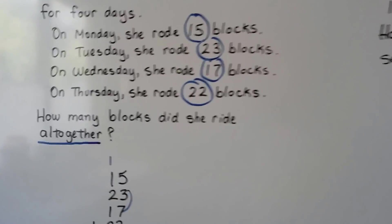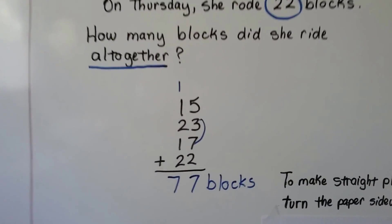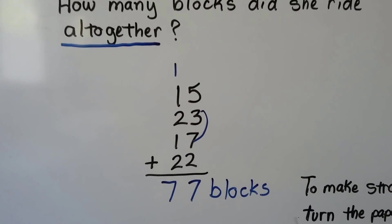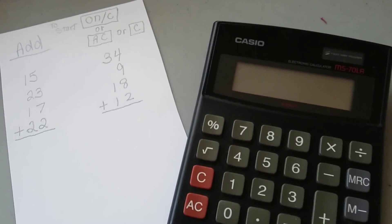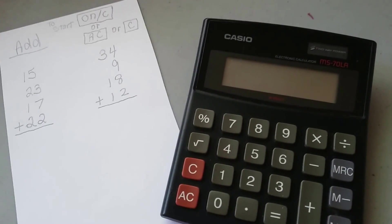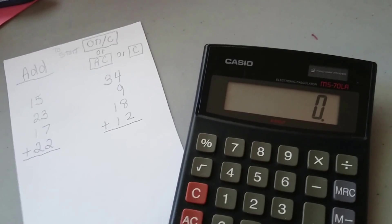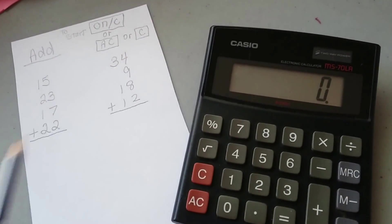So if we wanted to add these numbers from this word problem on a calculator, let's see how that would work. I've got a regular calculator here and I can push the AC button to turn it on. See how the zero appeared?